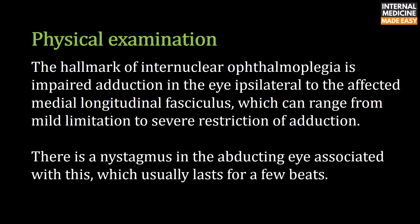Physical examination. The hallmark of internuclear ophthalmoplegia is impaired adduction in the eye ipsilateral to the affected medial longitudinal fasciculus, which can range from mild limitation to severe restriction of adduction. There is a nystagmus in the abducting eye associated with this, which usually lasts for a few beats.